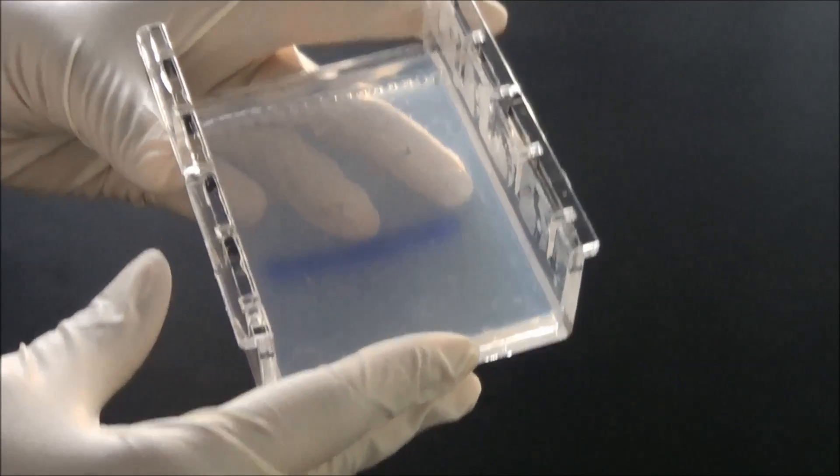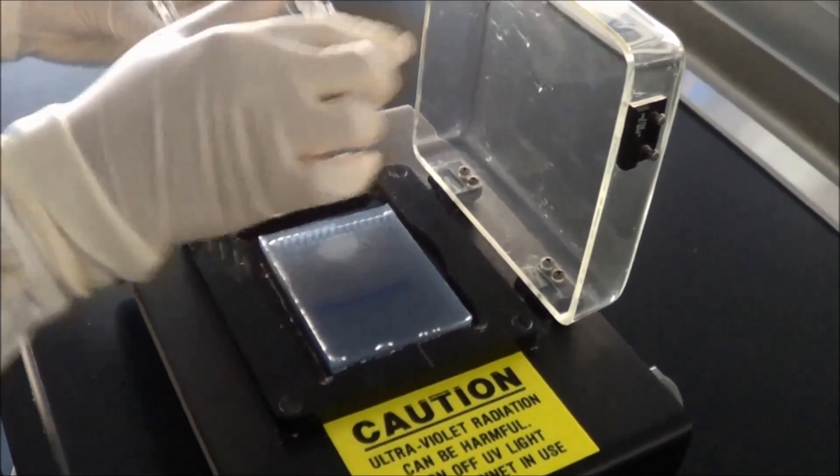After the gel has run, you then visualise it by carefully sliding it into a UV transluminator and check for DNA bands fluorescing.